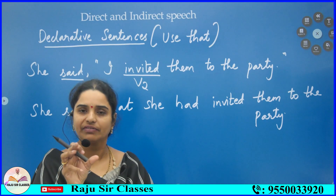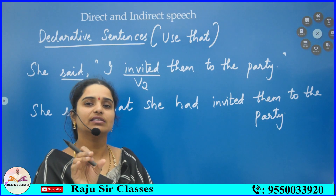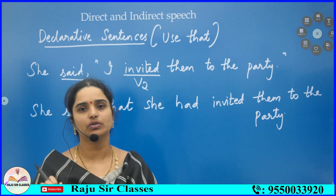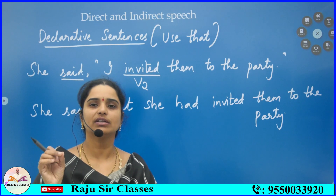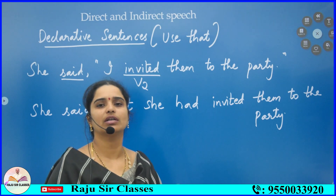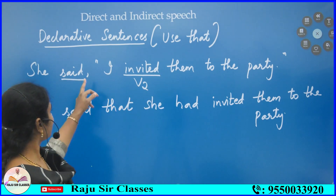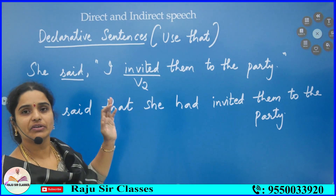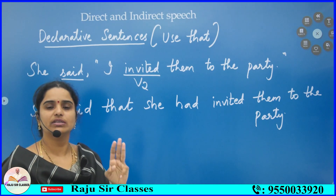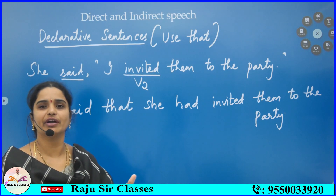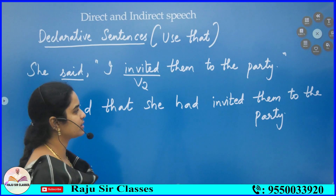In any exam, to find the answer for direct to indirect speech conversion, use three things: first, identify the sentence type — declarative, interrogative, or exclamatory; second, identify the reporting verb; third, apply the tense change. If you use these three things, you can easily find the answer.